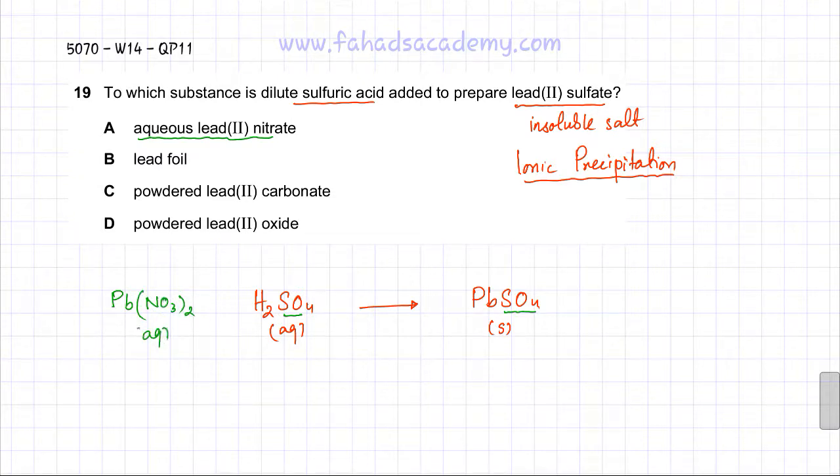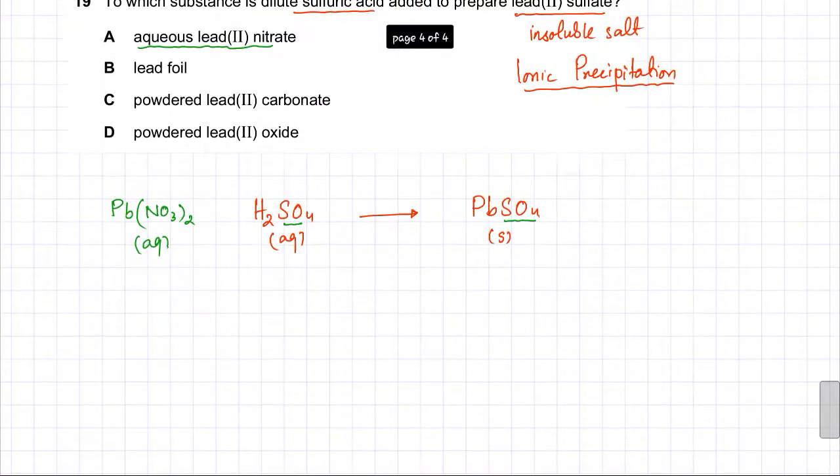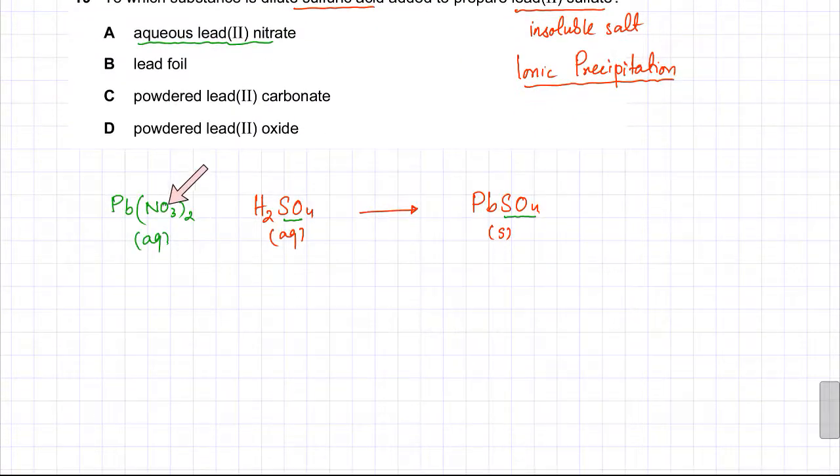The reason it has to be aqueous - I'm going to describe why we need aqueous lead nitrate instead of powdered lead carbonate, which is insoluble. Lead(II) oxide is also insoluble, and lead foil contains lead metal.